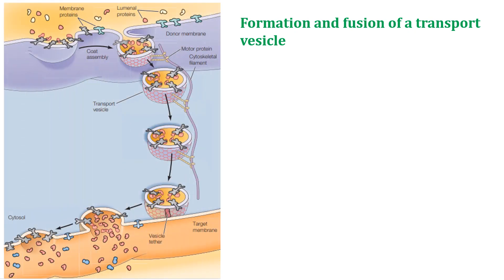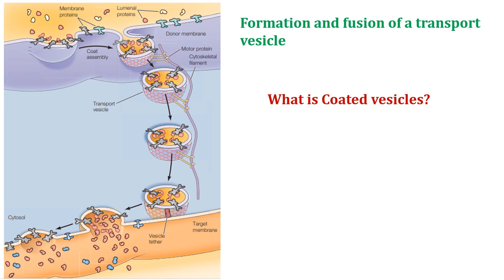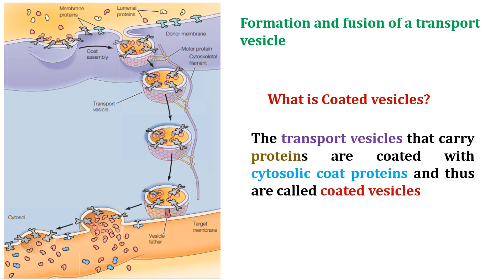Most transport vesicles that carry proteins from the ER to the Golgi and subsequent compartments are coated with cytosolic coat proteins, and are thus called coated vesicles. For example, looking at the donor membrane — which faces the trans-Golgi lumen or ER lumen on one side and the cytosol on the other — luminal proteins one and two and membrane proteins are present. The coat assembles to form a bud, and vesicles coated with different types of proteins are produced.